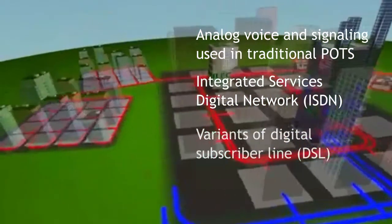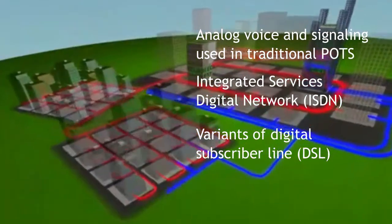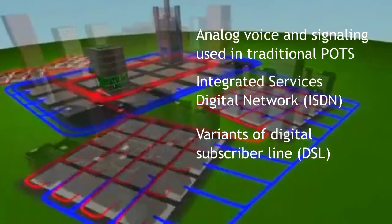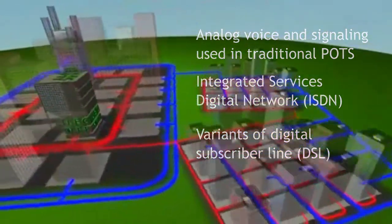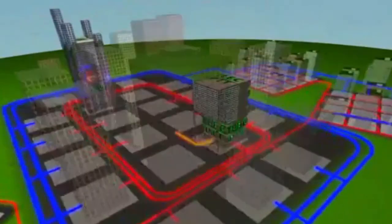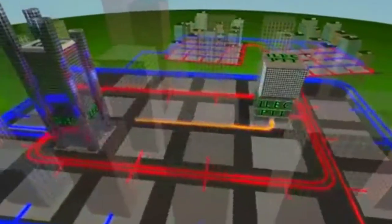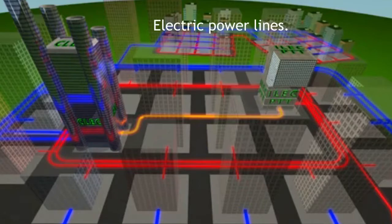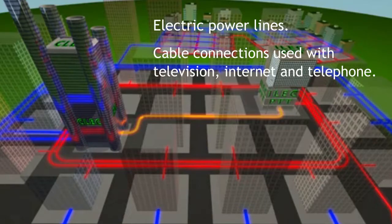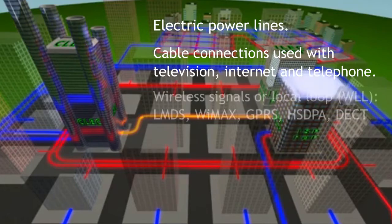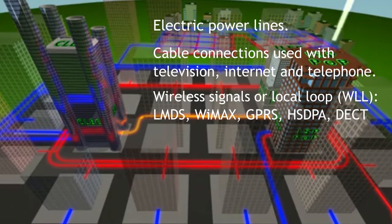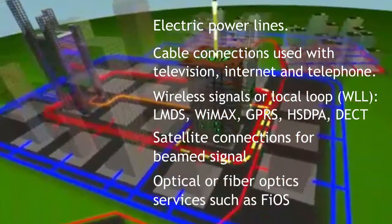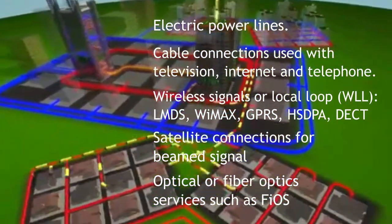These applications include analog voice and signaling used in traditional POTS, integrated services digital network (ISDN), and variants of digital subscriber line (DSL). The term local loop is sometimes used for any last mile connection to the customer regardless of technology or intended purpose, including electric power lines, cable connections used with television, internet and telephone, and wireless signals.